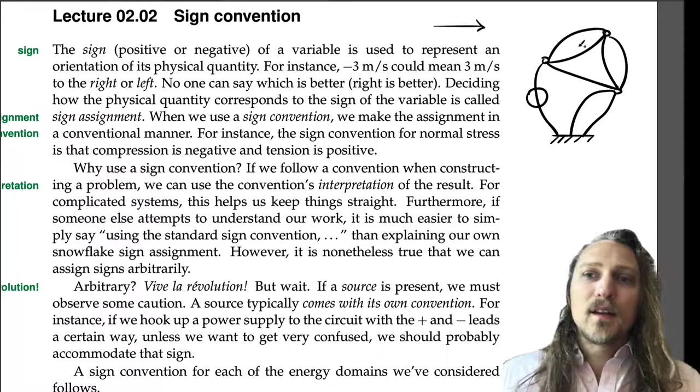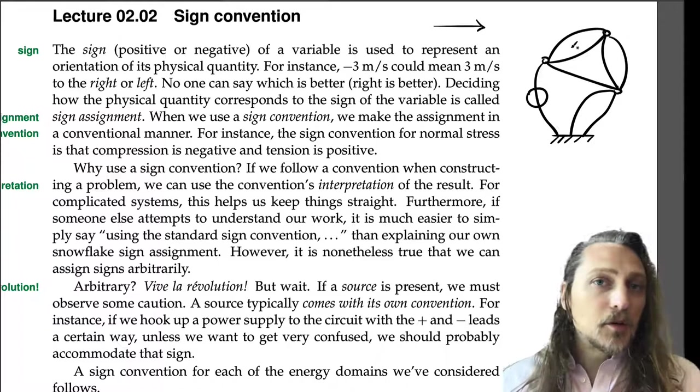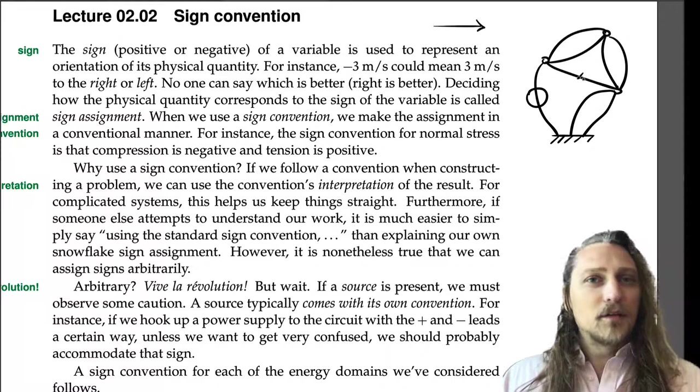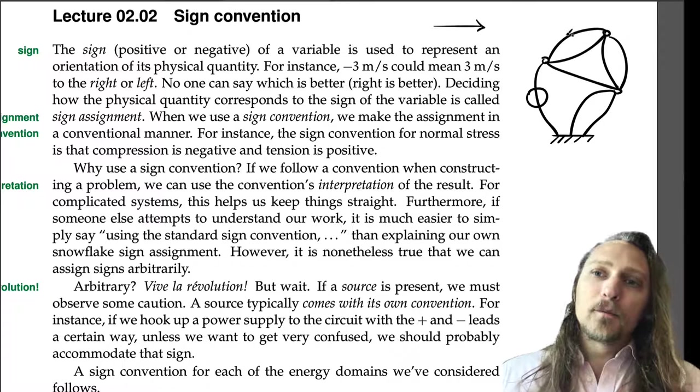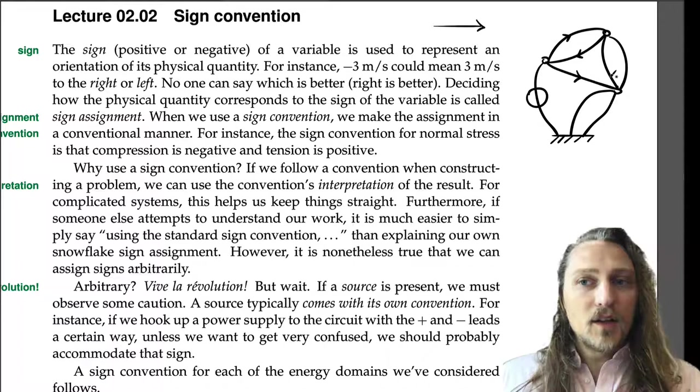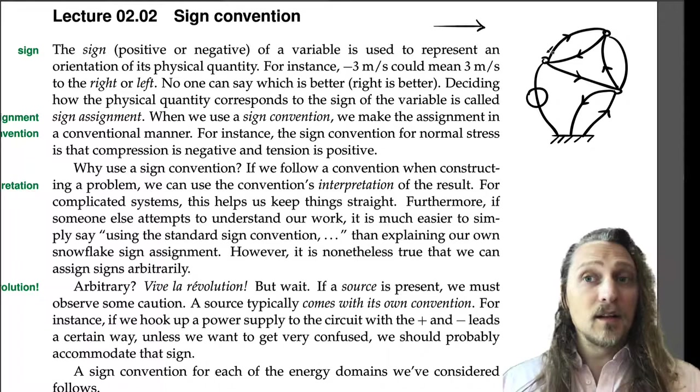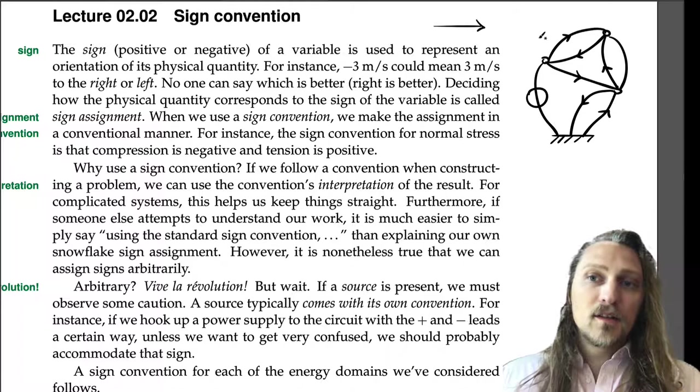So what I just said is that we can actually arbitrarily assign the sign direction. One thing that we will observe in this class, though, in terms of our convention, just sort of like the minimal level of convention that we require, is that the direction we draw an arrow on each of these passive elements, although it is arbitrary, we can assign an arrow direction any way we want. We will understand that to mean that the across variable drops in that direction, so in the direction of the arrow.